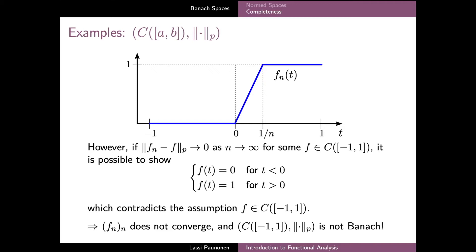We can picture the natural limit of this sequence: it is the function equal to zero from minus one to zero and then jumping to the constant value one for positive values of t — essentially a Heaviside step function. The problem is that this natural limit is discontinuous and therefore lies outside our original space of continuous functions, which is precisely why the sequence fails to converge in that space.